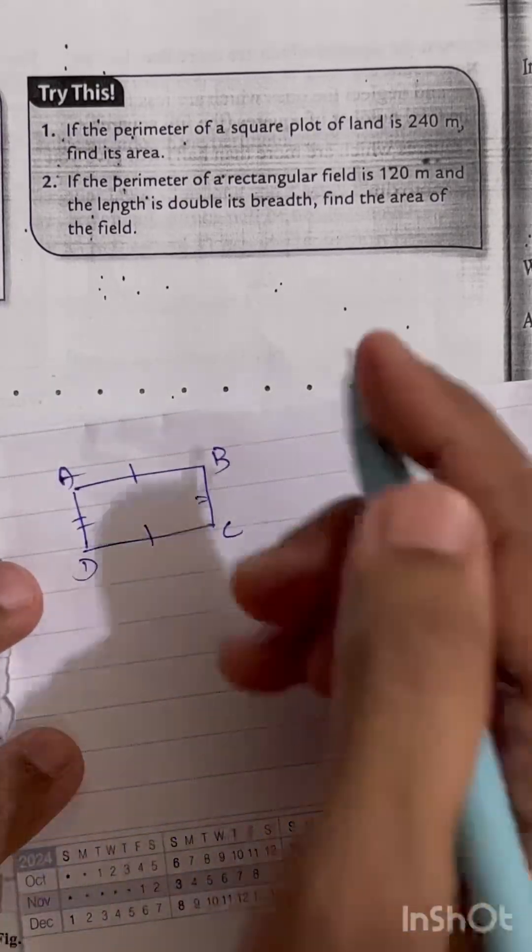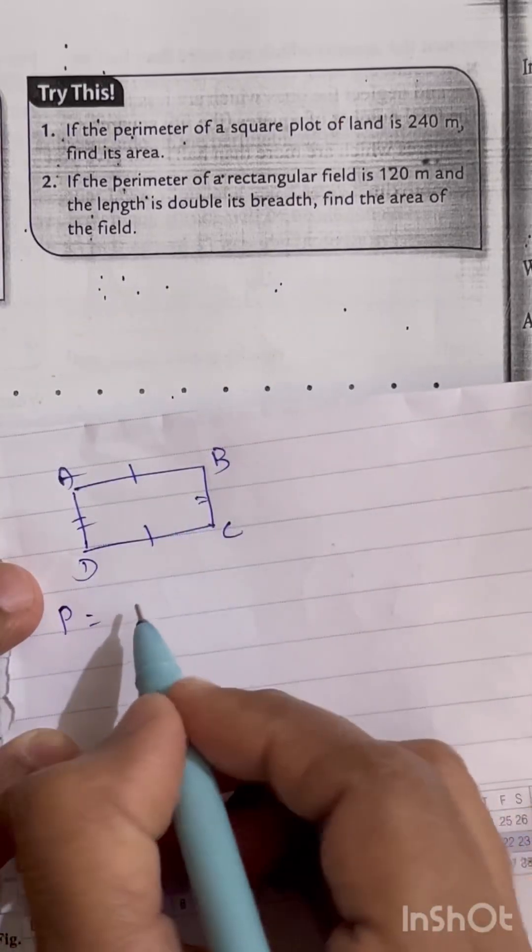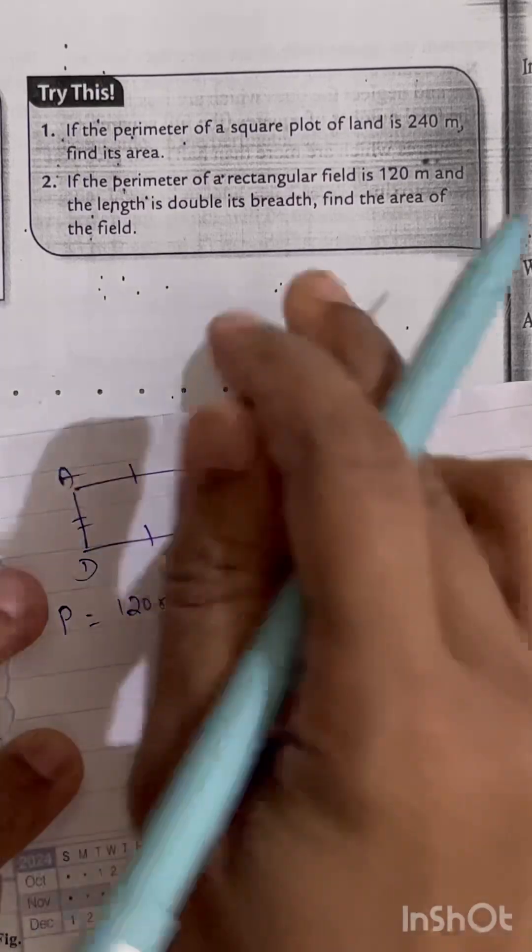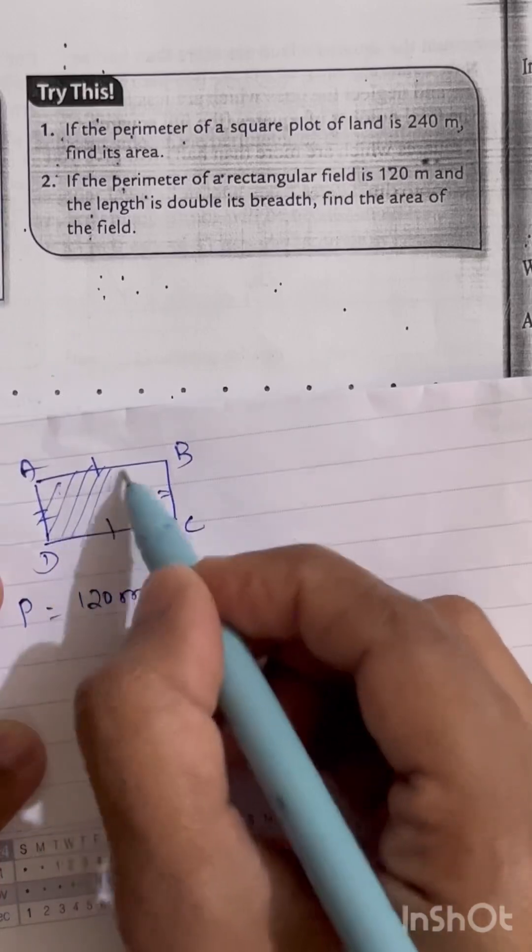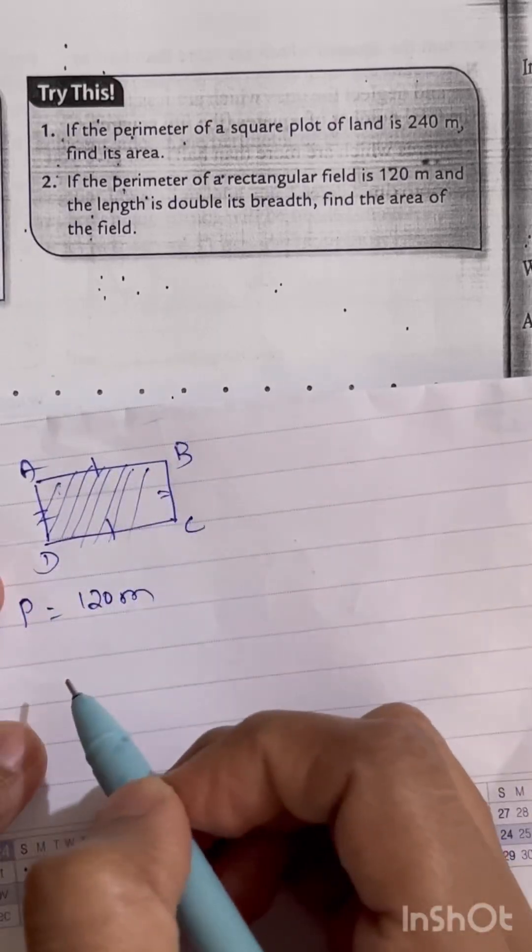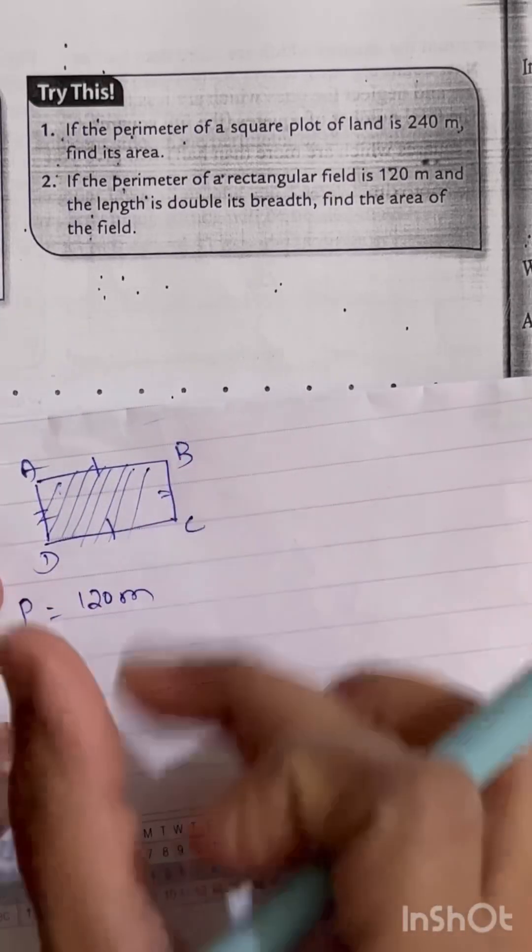And apart from this, what they have given: they have given the perimeter of the rectangle equals 120 meters. And what we have to find here is area, which is the surface enclosed by the closed figure.